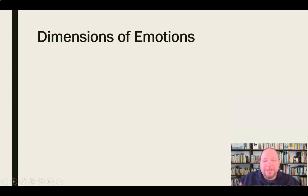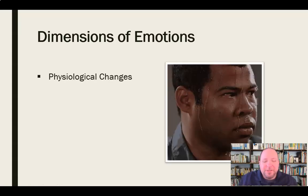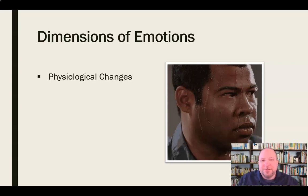Let's break down this definition by talking about the dimensions of emotion. The first couple are pretty self-evident — the ones most people would think about. First, physiological changes. When we experience a strong emotion, our body reacts. We get a rise in body temperature, our heart rate may increase, we may start sweating, our palms may get clammy, our stomach may tighten up. We experience these physiological changes as the result of a strong emotion, and the stronger the emotion, the more physiological change we'll experience.